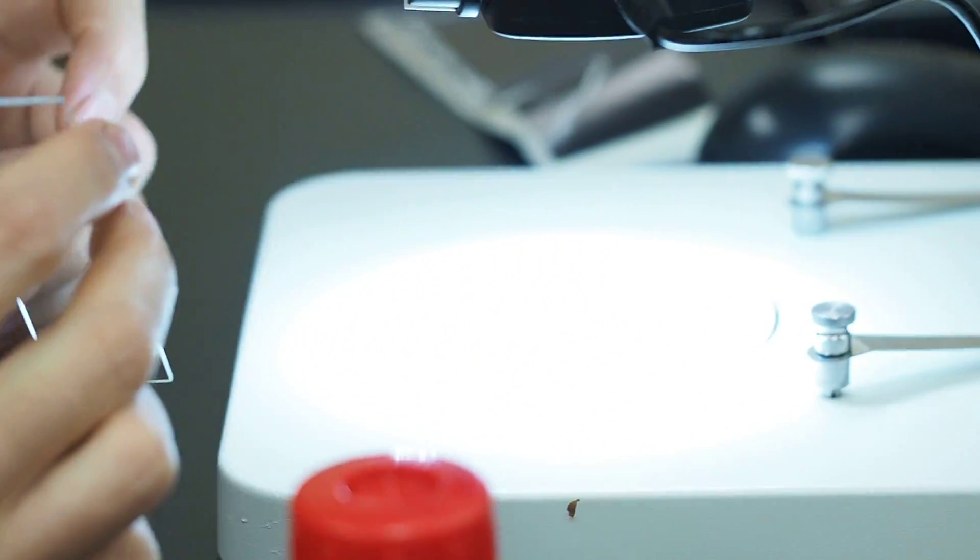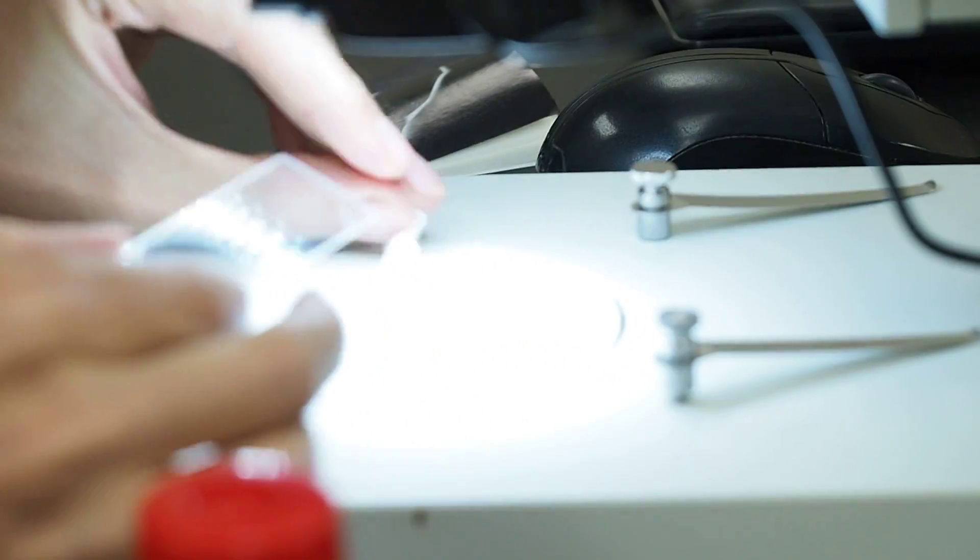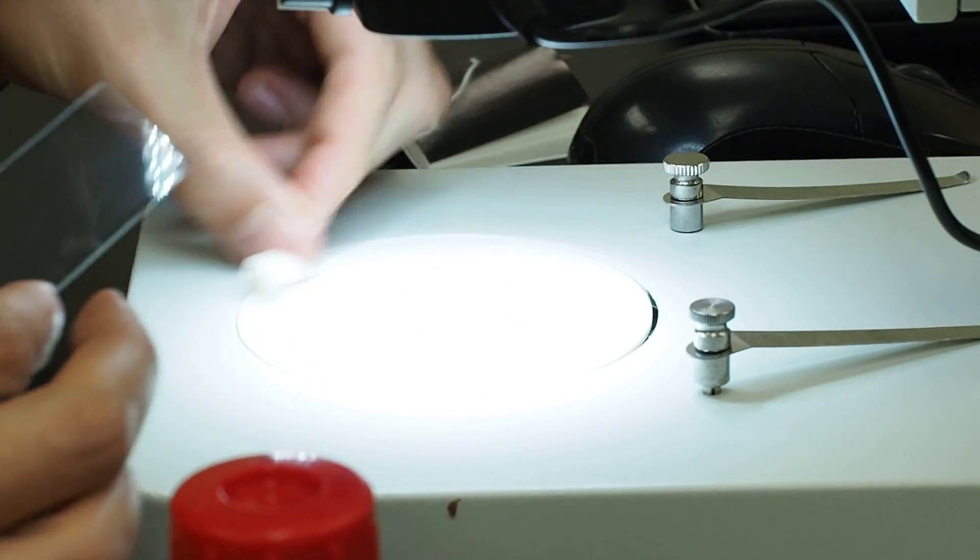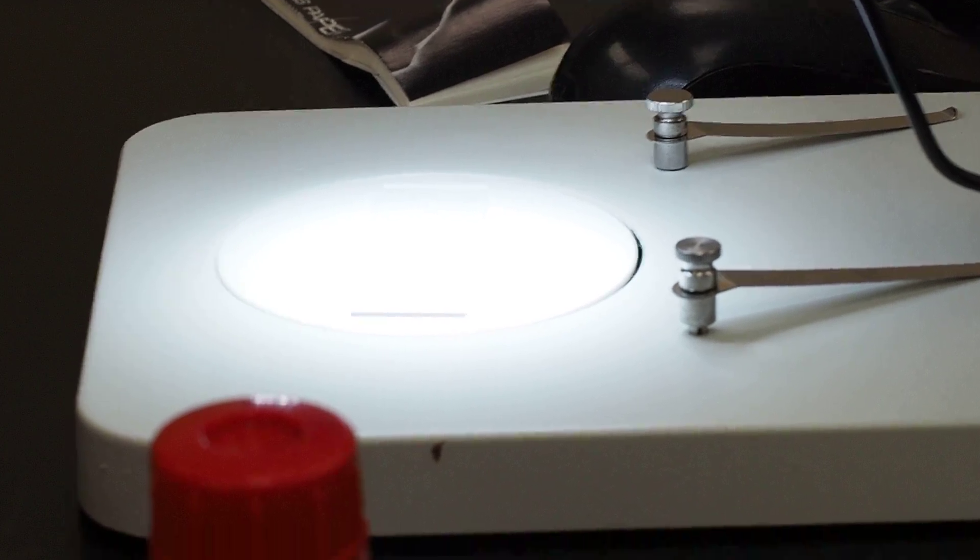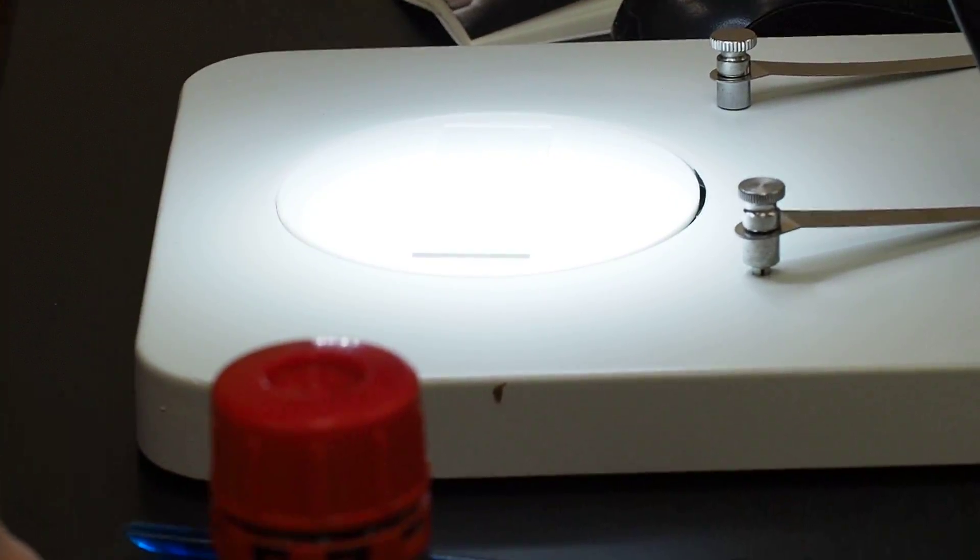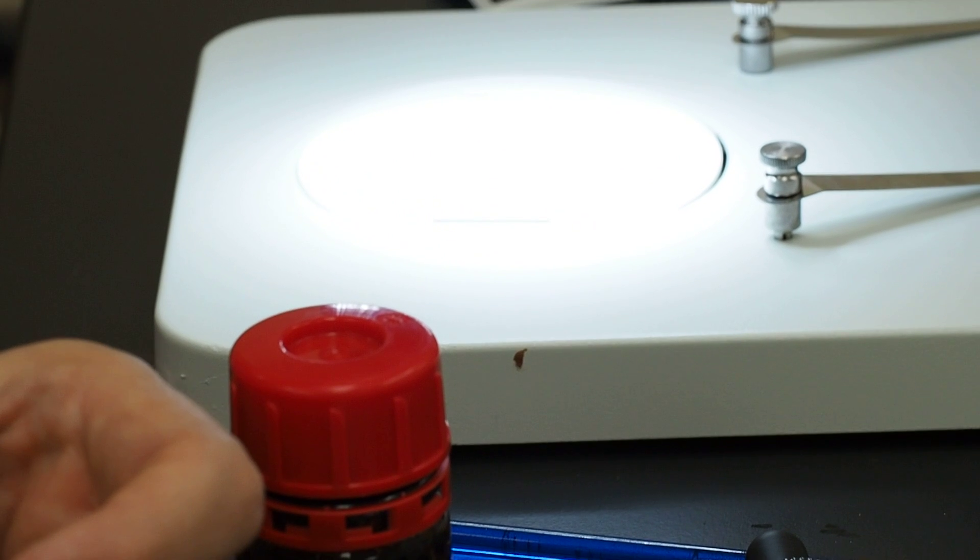So that one is ready. And then we have our cover slips. I like to use the round ones. Square, it doesn't really matter.